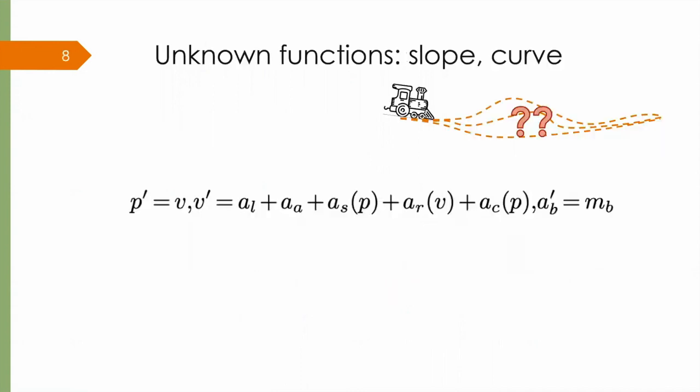Now I'll talk about how we dealt with the effects that were unknown at proof time, the exact slope and curvature of the track. When designing the controller, we need to predict a provable upper bound on position P after one control cycle. In order to derive this bound, we will require a bound on velocity. In order to bound velocity, we need to deal with these unknown functions, the effect of slope and of curve.